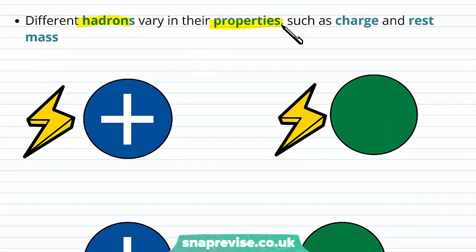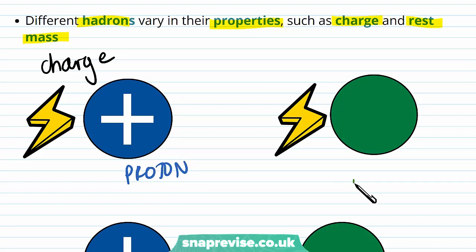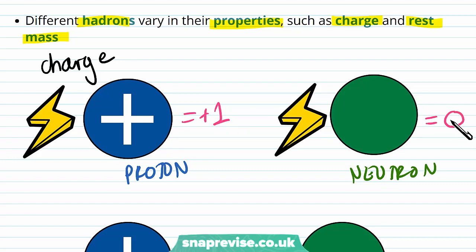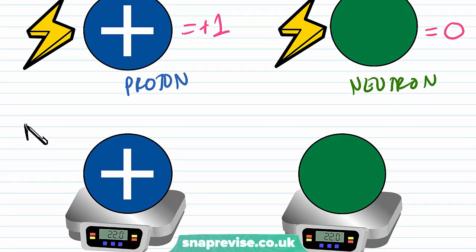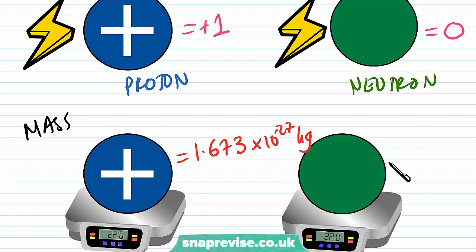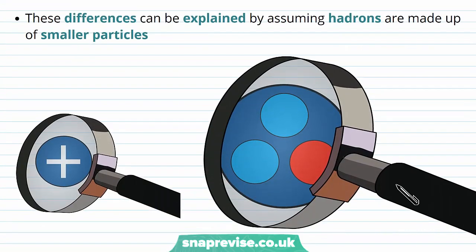Different hadrons vary in their properties such as charge and rest mass. We can compare the charge of protons and neutrons: the charge of a proton is equal to plus one, and a neutron is neutral so it has zero charge. We can also compare their masses — although they have very similar masses, they are slightly different. A proton has a rest mass of 1.673 times 10 to the minus 27 kilograms, whereas a neutron has a rest mass of 1.675 times 10 to the minus 27 kilograms. So if they're both classified as hadrons, why do they have these different properties?